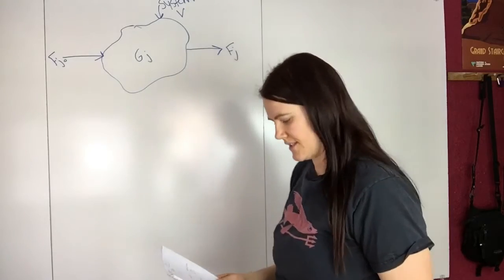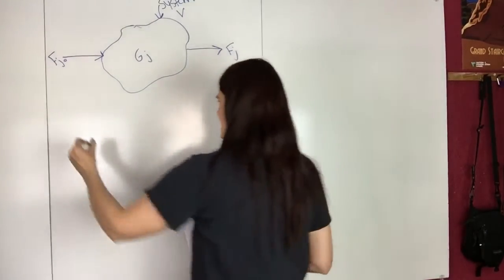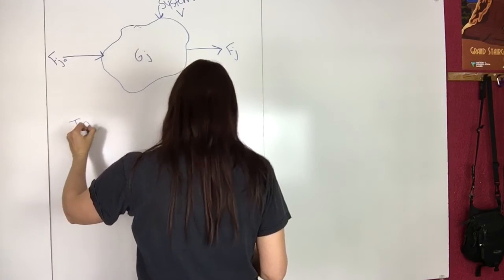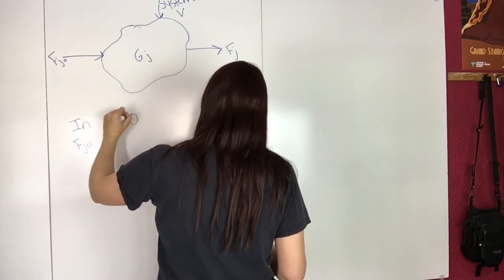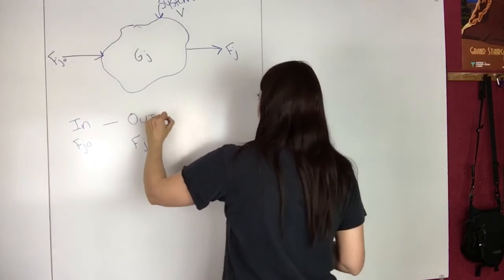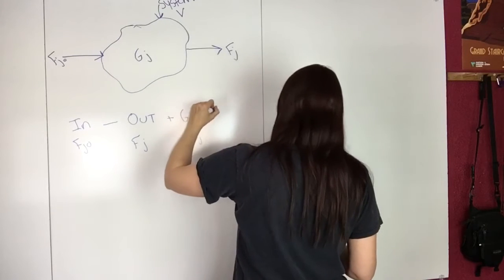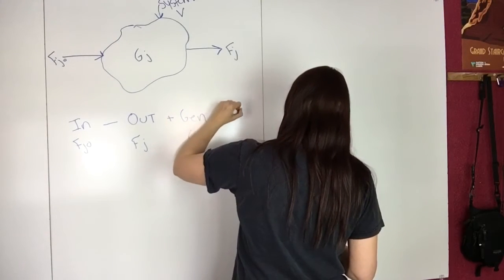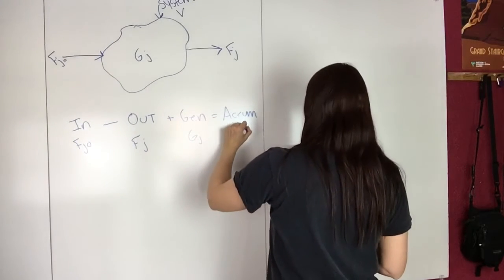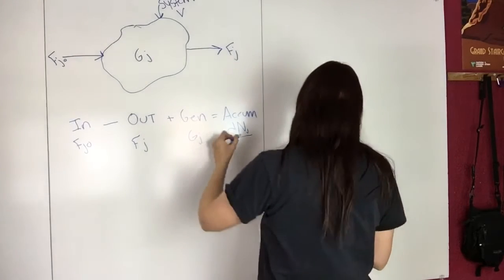And you can have all of these. So then we just do a balance and add all these up. So you have in FJ naught minus out the FJ plus the generation term GJ equals accumulation. And so then you have this change in whatever you have in here with time.